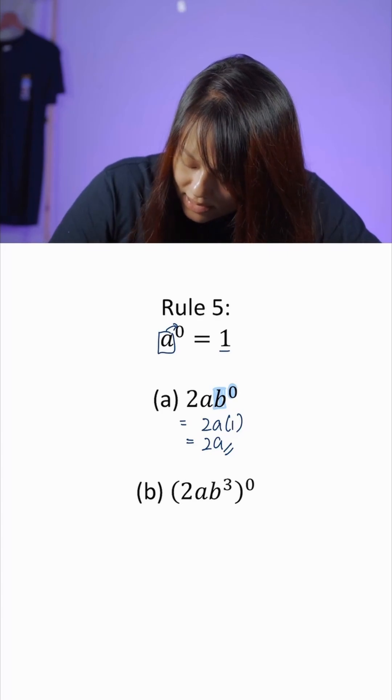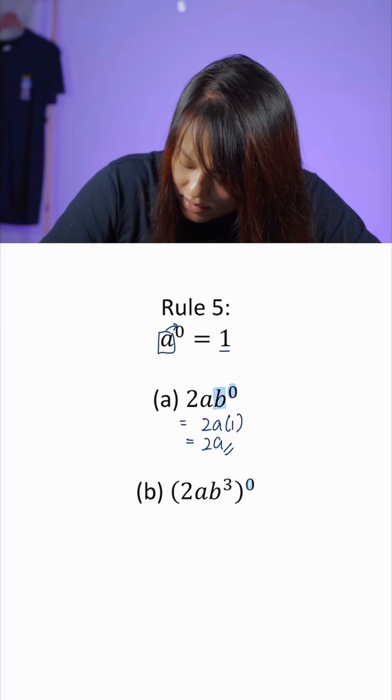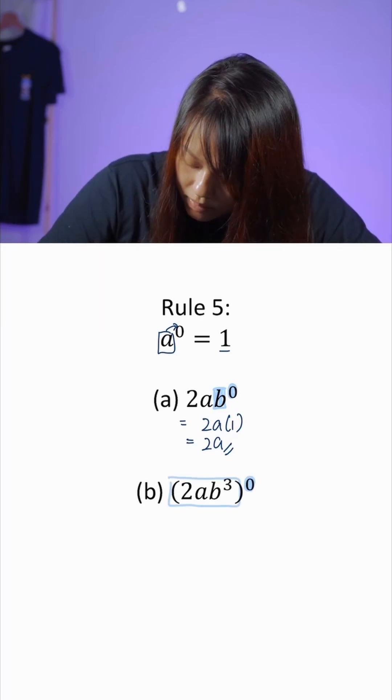Now let's look at the next example. We can see that (2ab^3)^0, the whole thing is being powered as 0. So this whole term will actually become 1.